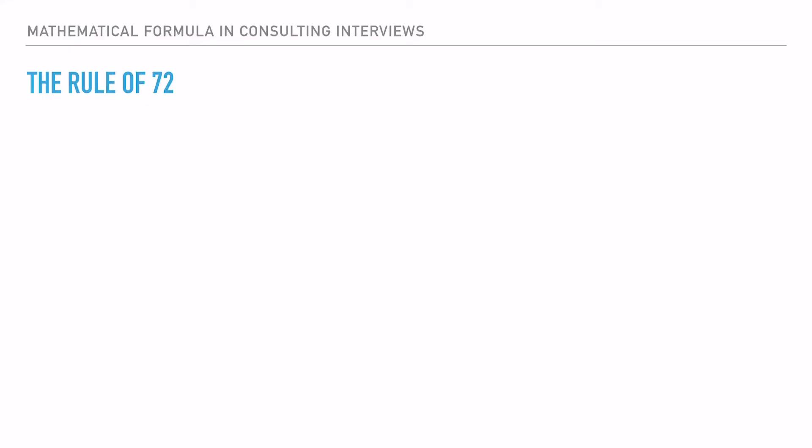The fourth formula is the rule of 72. To be honest, I haven't seen this come up in many cases, but if it does and you know how to use it, it will surely help you stand out. The rule of 72 states that the time for an asset to double in value equals 72 divided by the interest rate.